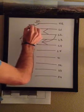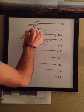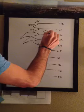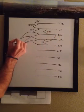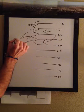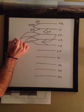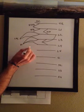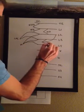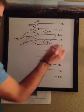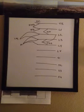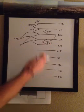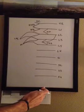So: subcostal, iliohypogastric, ilioinguinal, genitofemoral, lateral femoral cutaneous, femoral, obturator — that's your lumbar plexus without the LST, because the LST is going to be built into the sciatic.